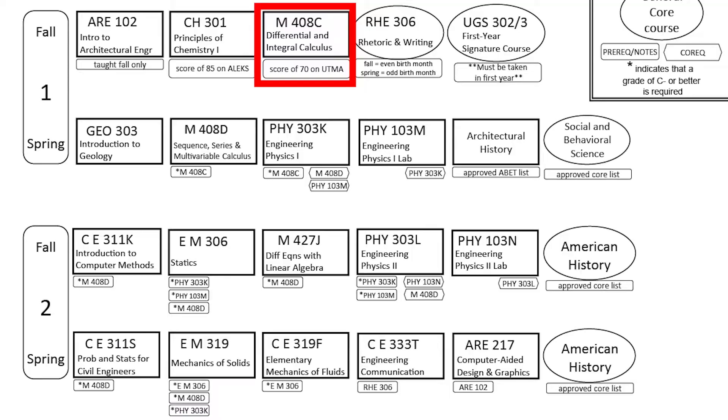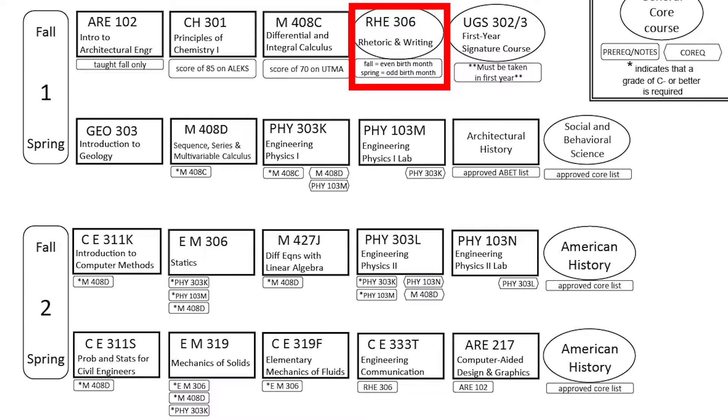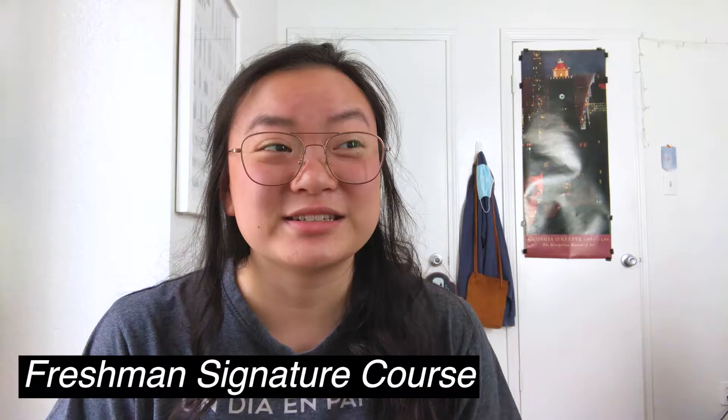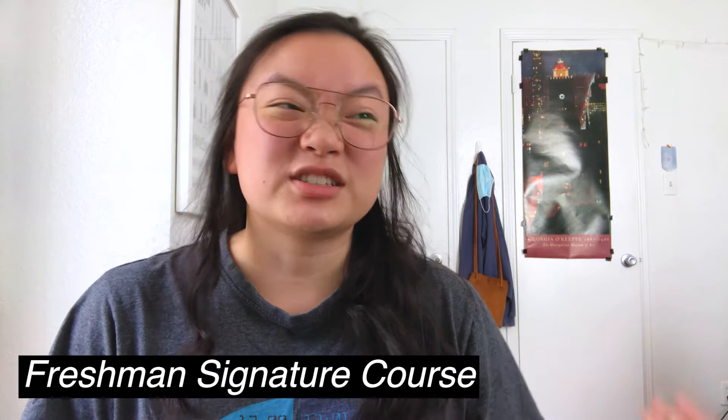Other first semester courses include Chemistry, which is basically just high school chemistry — you can skip it if you did AP Chemistry. Then there's Differential and Integral Calculus, which is AP Calculus AB level. Rhetoric and Writing is just a core university requirement. The First Year Signature Course is something special to UT — it's basically a freshman course to learn what a college course is like.